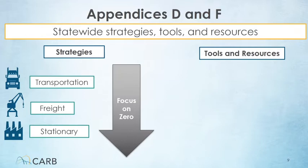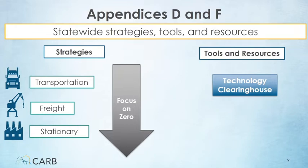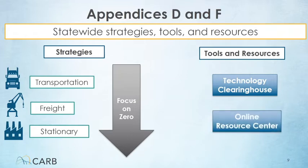These include the technology clearinghouse, with information on control technologies and regulations which control how much pollution can be emitted from different sources, and the online resource center, which provides information on strategy development, technical assistance, and community engagement.